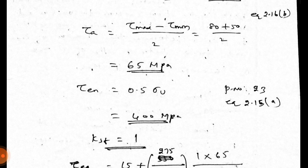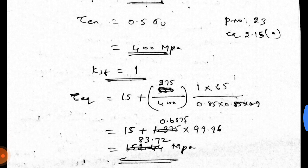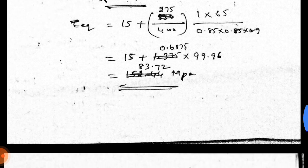Tau en, endurance stress, 0.5 sigma u. Page 23, equation 2.15a. Then, ksf equal to one. If we substitute and simplify, we will get 83.72 MPa.